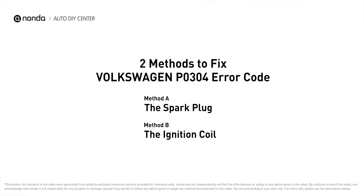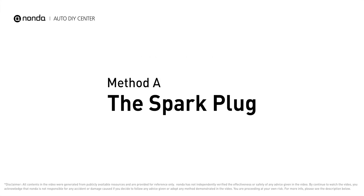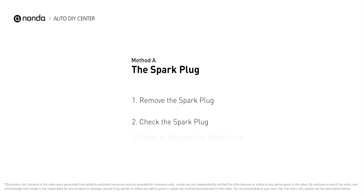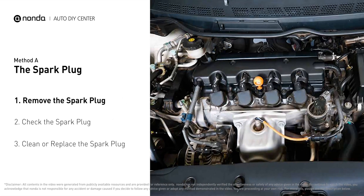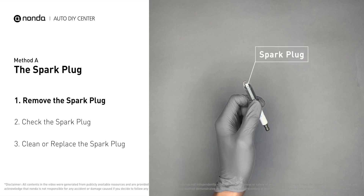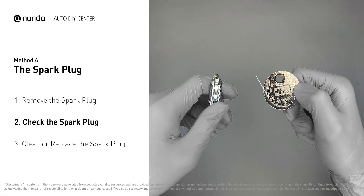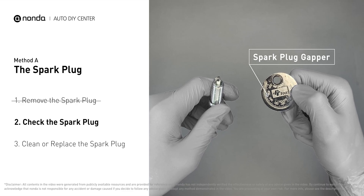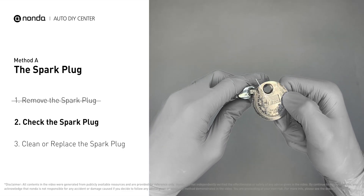Here are two of the most practical solutions to fix Volkswagen's P0304 error code. Method A: the spark plug. The spark plugs are located at the engine end of the wires, under the plug covers that attach them. First, carefully remove the spark plug, then use a spark plug gapper to check the spacing of the spark plug.